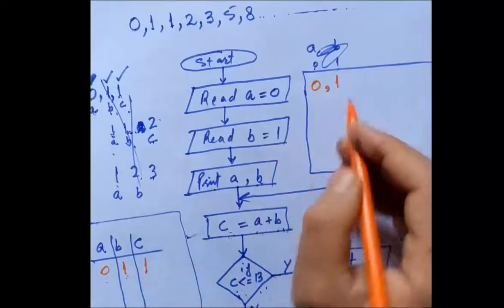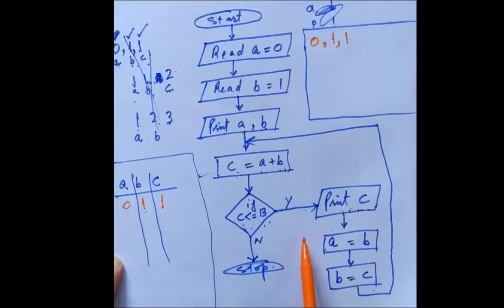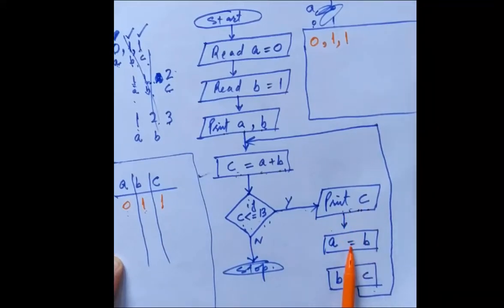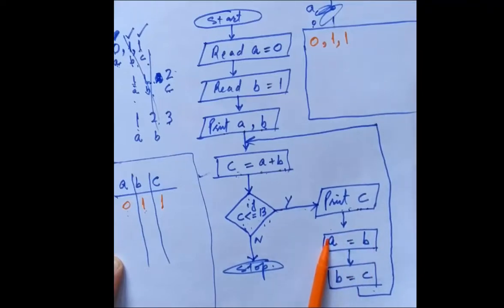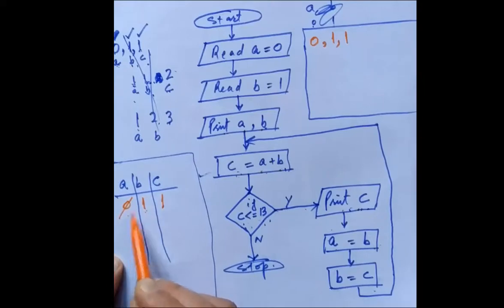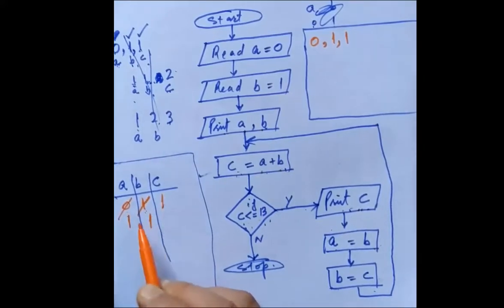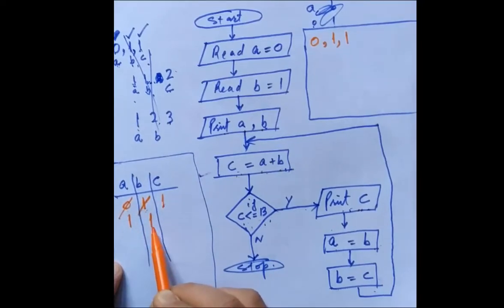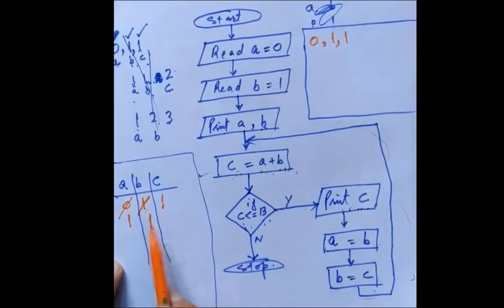C is holding 1, so 1 gets printed. Then a equals b: a was 0, it gets replaced by b which is 1. B equals c: b was 1, gets replaced by c which is 1. Now a and b are both 1. We repeat from c equals a plus b: 1 plus 1 equals 2. Previous value of c gets cancelled and new value is 2.